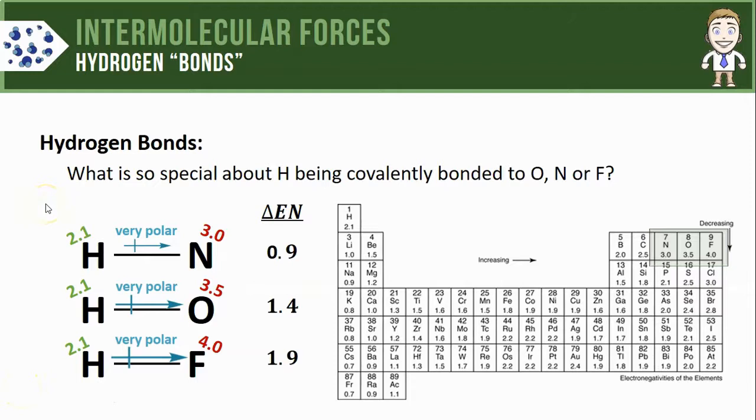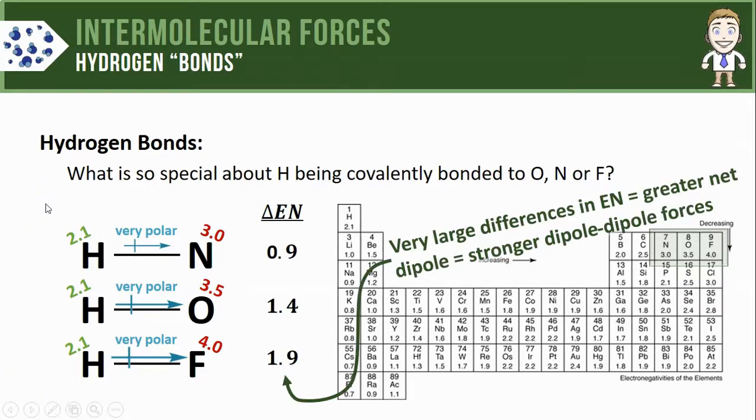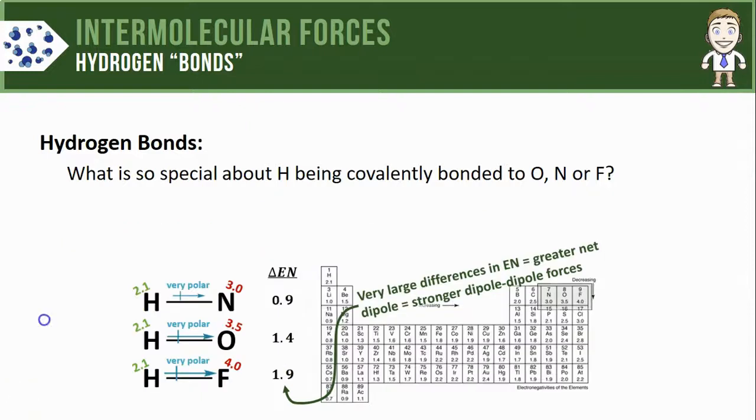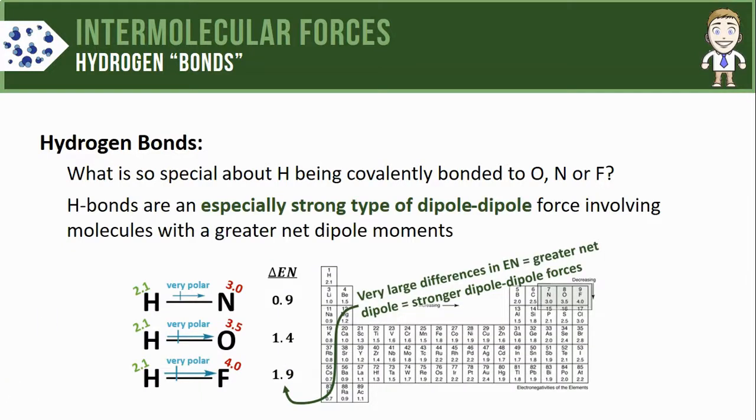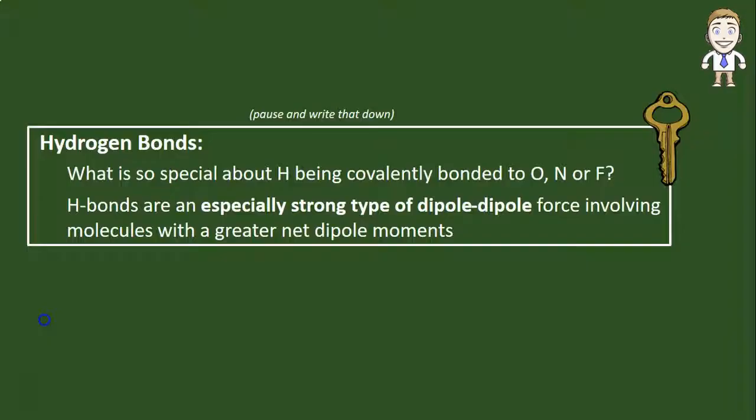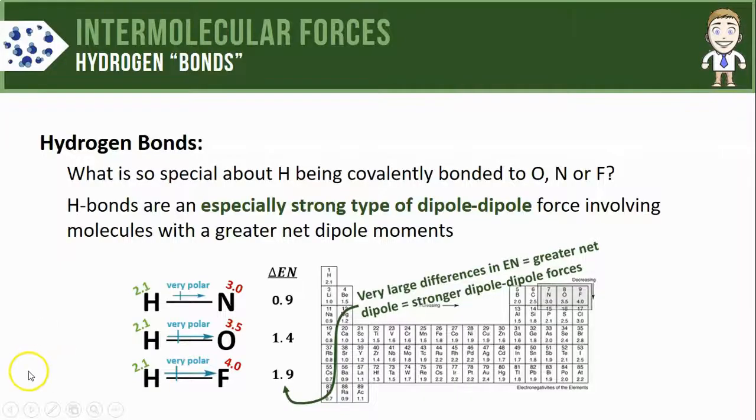Finally, jumping back to one of the ideas from our last video, you might remember that any time there's very large differences in electronegativity, that leads to molecules with greater net dipoles, and that leads to very, very strong dipole-dipole forces, and that's in fact what makes hydrogen bonds so special. They're just stronger than most other dipole-dipole forces. We can summarize that by simply saying hydrogen bonds are an especially strong type of dipole-dipole force involving molecules with greater net dipole moments.